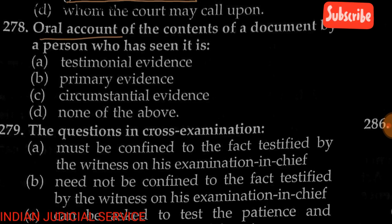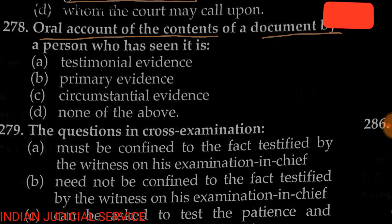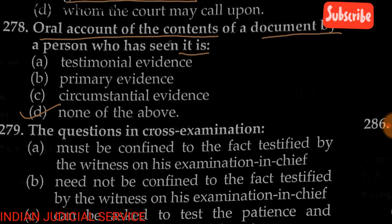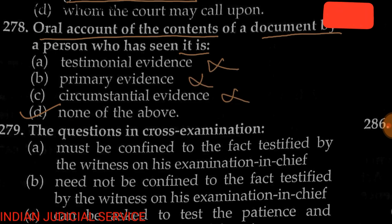Question number 278: The oral account of the content of a document by a person who has seen it is — testimonial evidence, primary evidence, circumstantial evidence, or none of the above. The answer is none of the above.